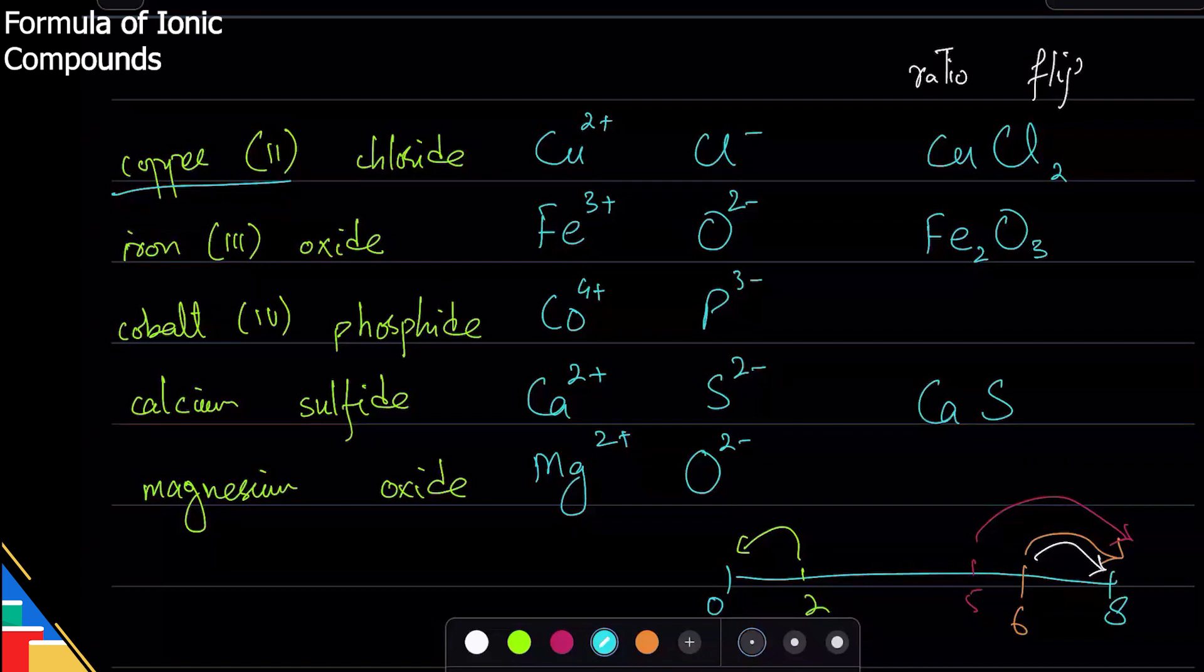I need one calcium and one sulfide to cancel each other out, and that's it. The ratio is one to one. It's not the charge that flips, it's the ratio. That is why the formula will be CaS.